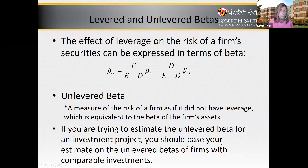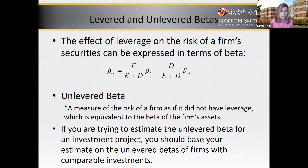The effect of leverage on a firm's securities can be expressed in terms of beta. Beta of the unlevered firm would be the percent of equity times the beta of equity, plus the percent of debt multiplied by the beta of debt. Unlevered beta is a measure of the risk of a firm as if it did not have leverage, which is equivalent to the beta of the firm's assets.